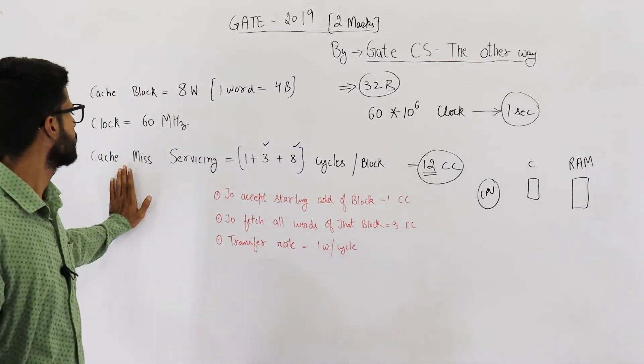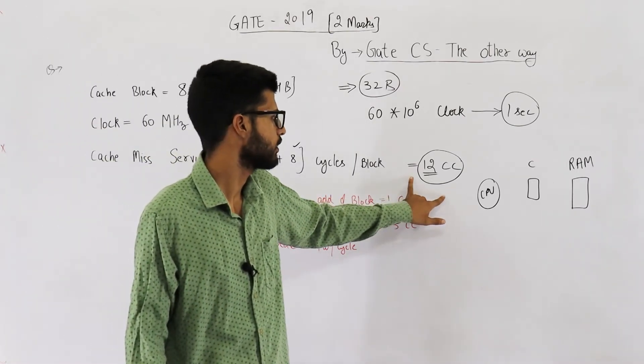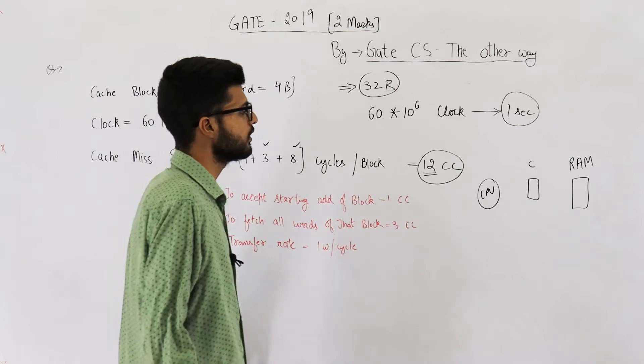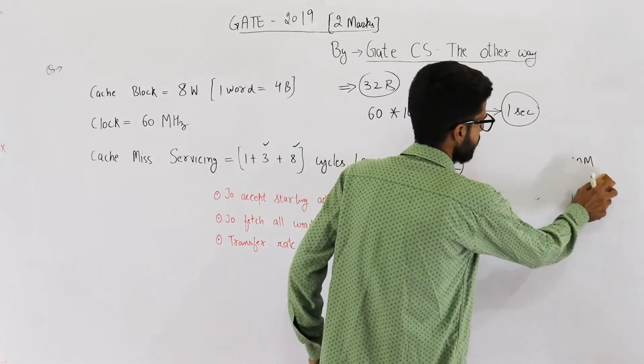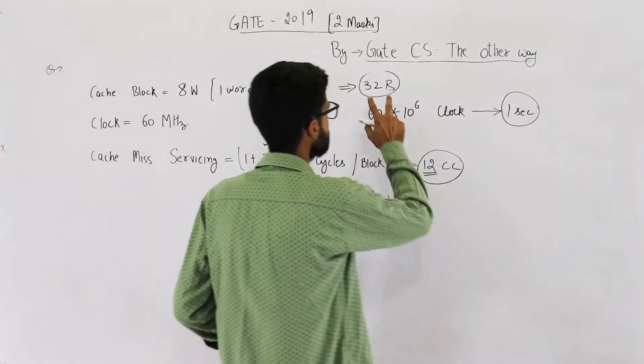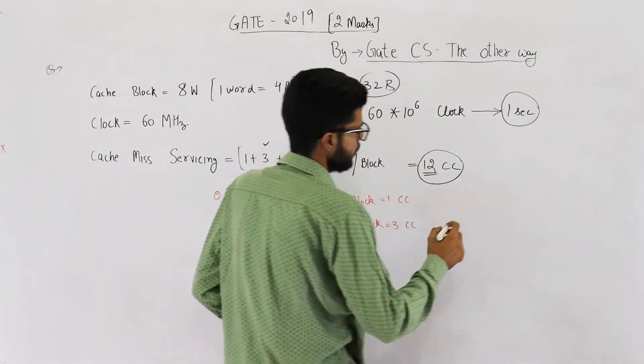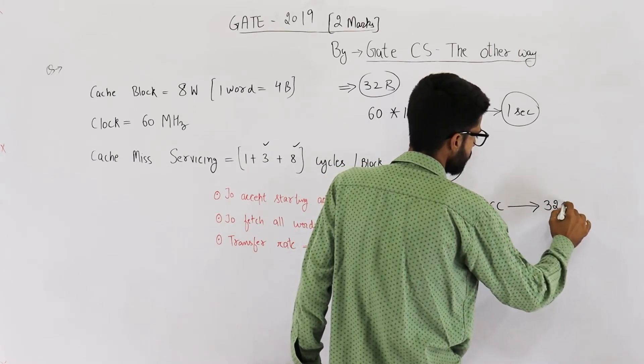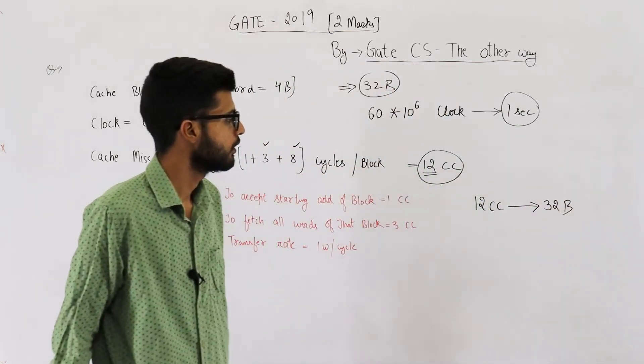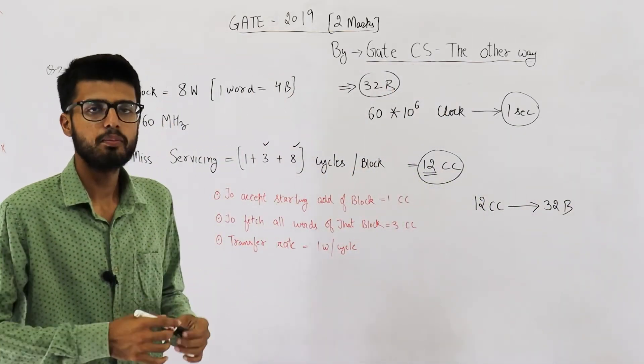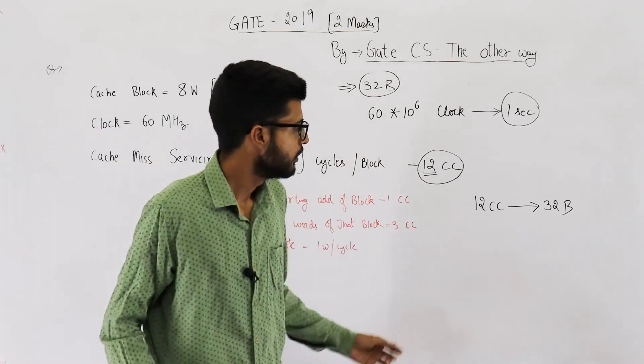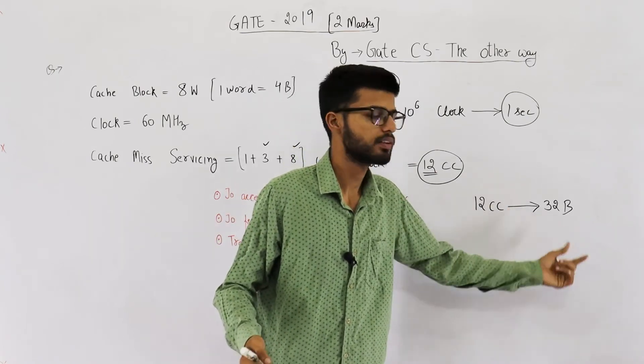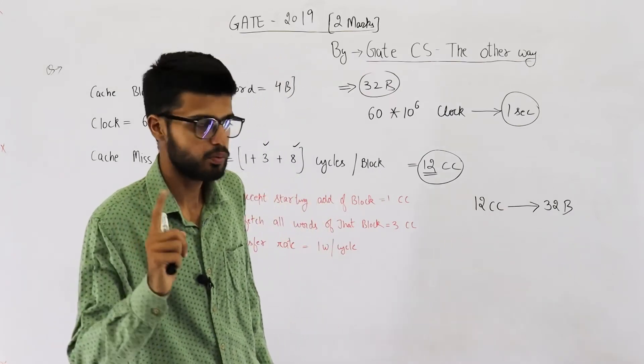Now, cache miss requires these many clock cycles. Also, cache block is 32 words. So, we can easily conclude that 12 clock cycles are required for transferring 32 bytes. You are required to find out how many bytes can be transferred in one second. Here we know in terms of clock cycles. But we are required to find out data transfer per unit time or in one second.